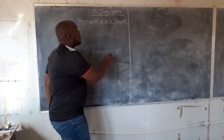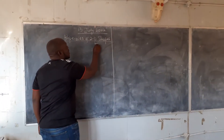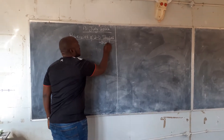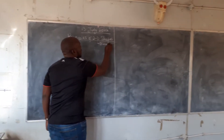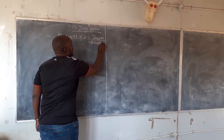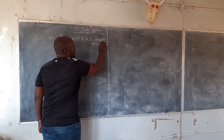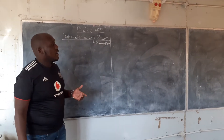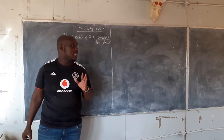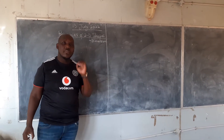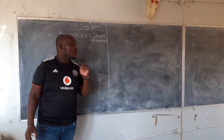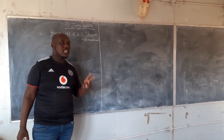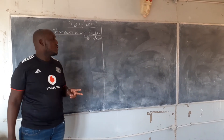The D here stands for dimensional. 2D does not mean that you have two sides, but 2D means that you have two dimensions. Not two sides — two dimensions.